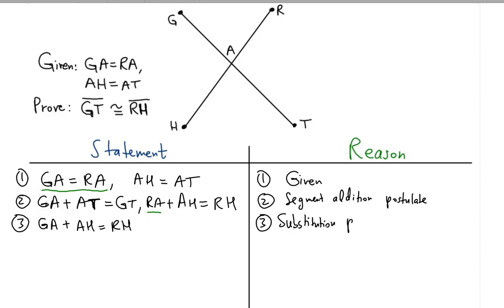Now that we have that, we can perform another substitution on the derived equation. Notice that AH can be substituted with AT using the second part of the given statement, because AH is equal to AT. So we can substitute this AH with AT in this equation, so GA plus AT is equal to RH. This is once again the substitution property of equality.